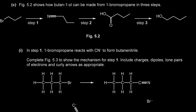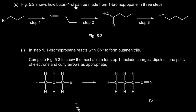Figure 5.2 shows how butan-1-ol can be made from 1-bromopropane in three steps. Step 1: 1-bromopropane is converted to butanenitrile. Step 2: butanenitrile is converted to butanoic acid. Step 3: butanoic acid is reduced to butan-1-ol.